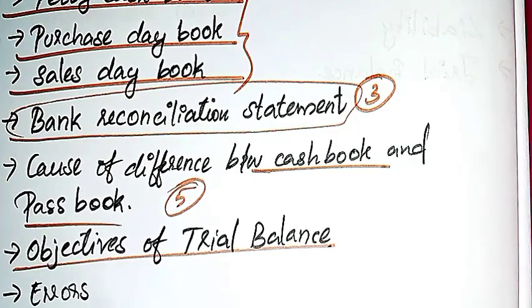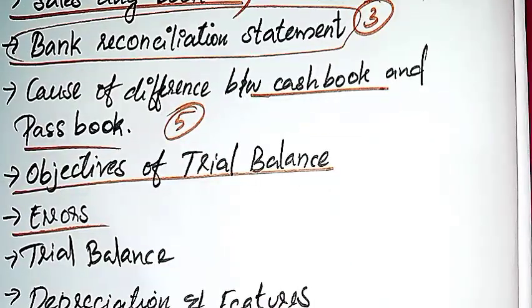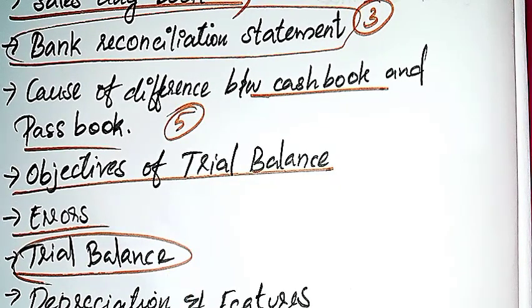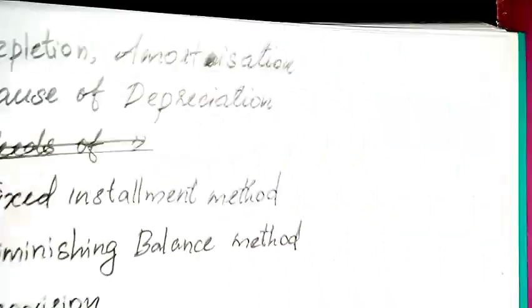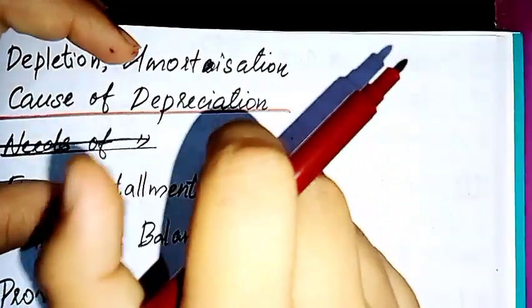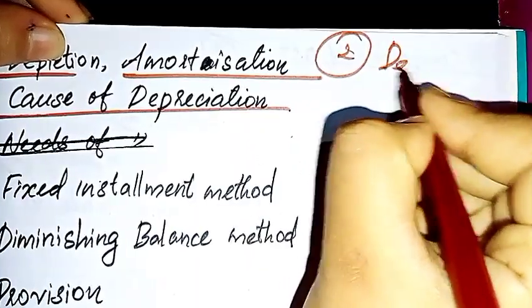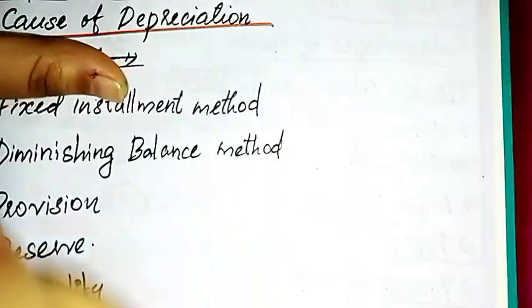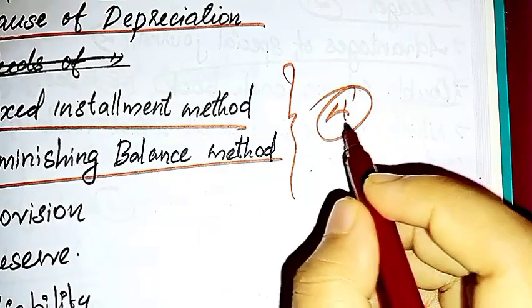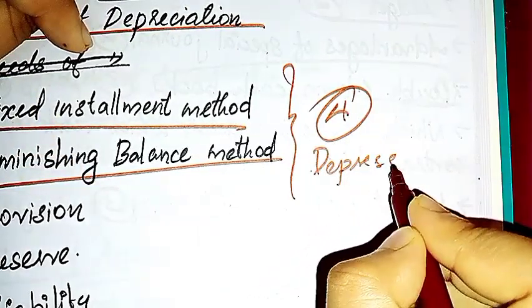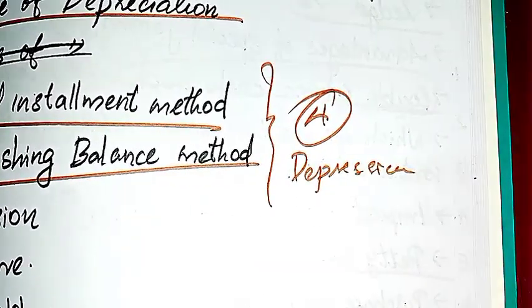Depreciation is an important topic. Next is depletion and amortization - we need to define these with two marks. Then in the fixed installment method and diminishing balance method, we need to calculate depreciation.